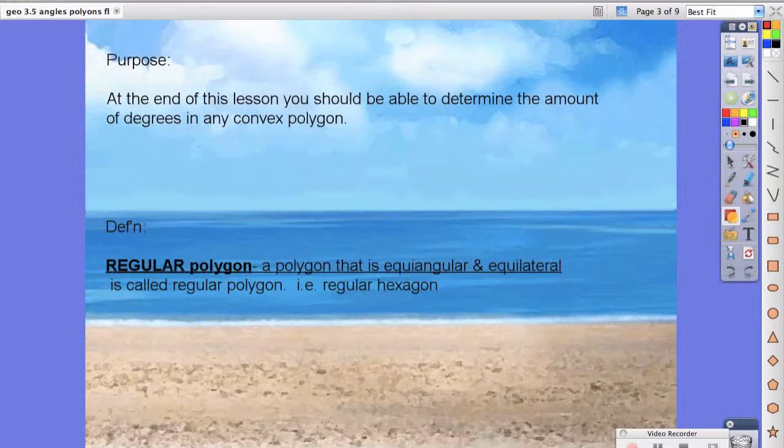Let's go over a quick definition: regular polygon. A regular polygon is a polygon that is equiangular and equilateral. For example, a regular hexagon. The word regular in front of the polygon name tells us that all the sides and angles are the same.